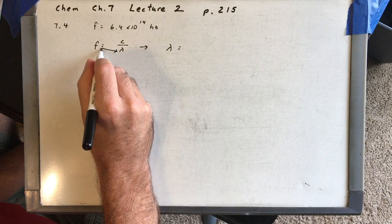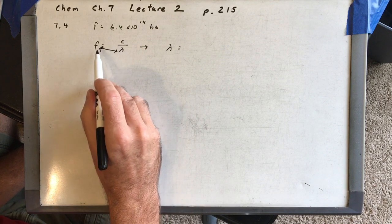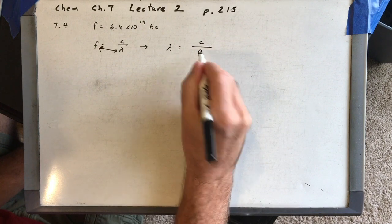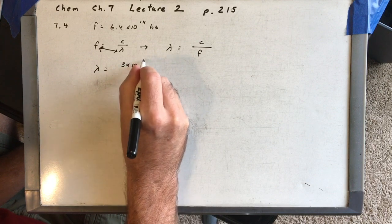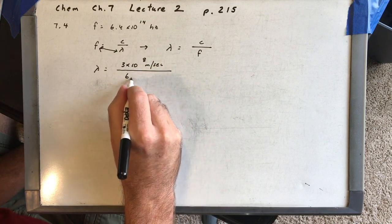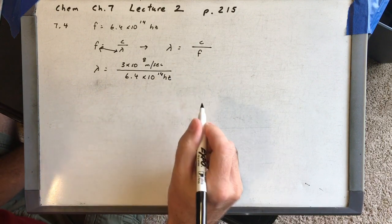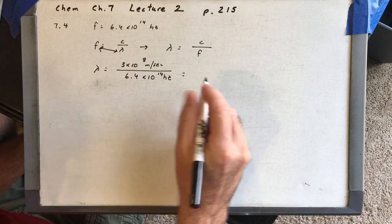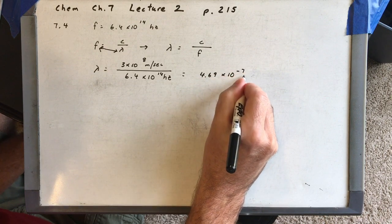What you do is just switch those two. You might remember that density is mass over volume — frequency is speed of light over wavelength, so it's similar algebra. You would have the speed of light over the frequency. So our wavelength is going to be 3 times 10 to the 8th meters per second divided by the frequency 6.4 times 10 to the 14th hertz. If you plug that into your calculator you get 4.69 times 10 to the minus 7 meters.